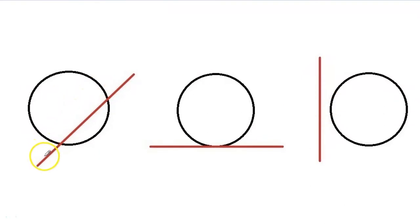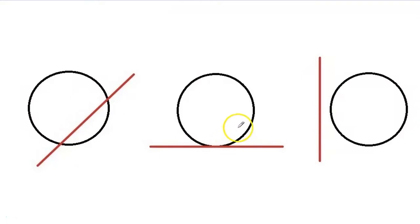If it is intersecting at two points, then the line is inside the circle. If it is intersecting at one point, then the line is on the circumference of the circle. And if it is not intersecting the circle at all, then the line is outside the circle.